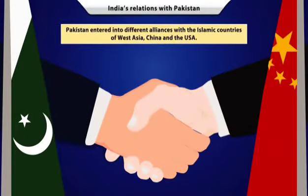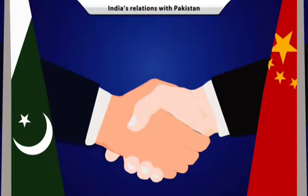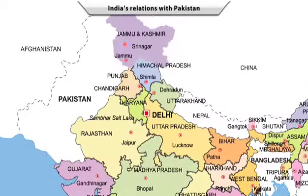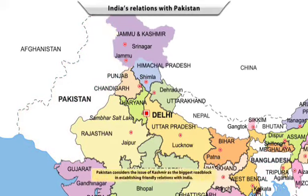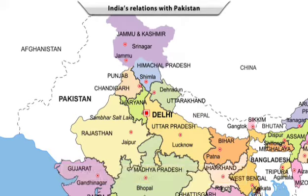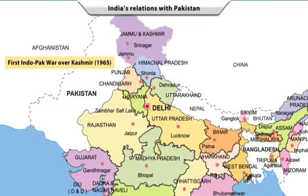On the other hand, Pakistan entered into different alliances with the Islamic countries of West Asia, China and the USA. There has been a dispute between India and Pakistan over the territory of Kashmir since 1947. Pakistan claims Kashmir to be part of its territory and considers this issue as the biggest roadblock in establishing friendly relations with India. The first Indo-Pak war was fought in 1965, followed by the Tashkent Agreement in 1966.